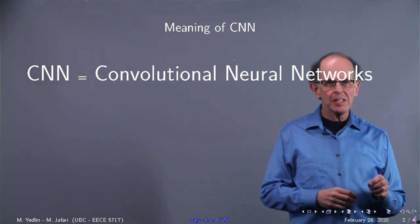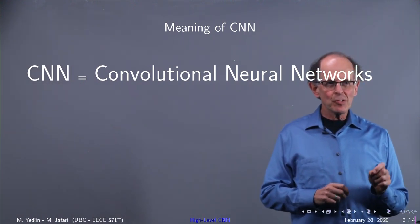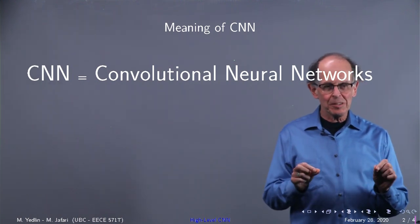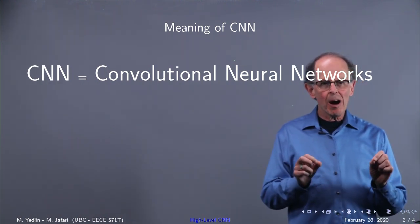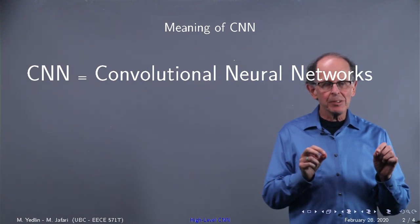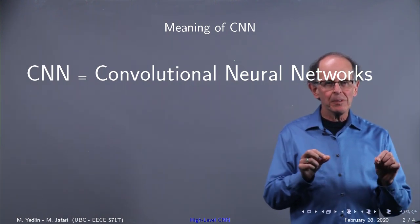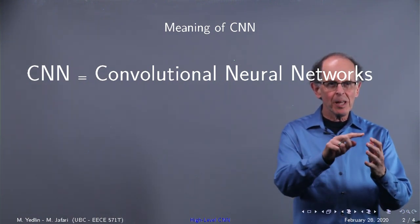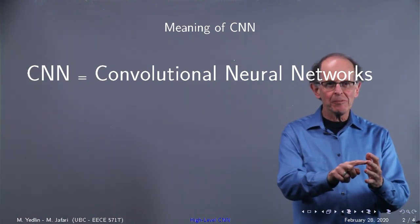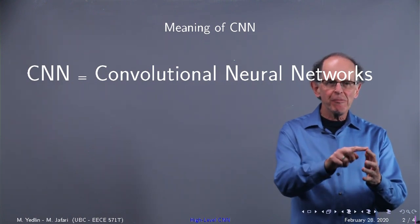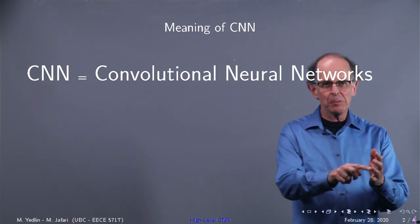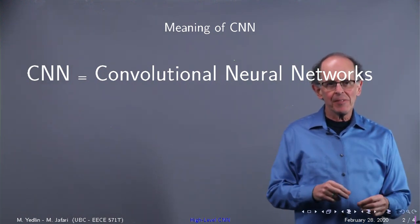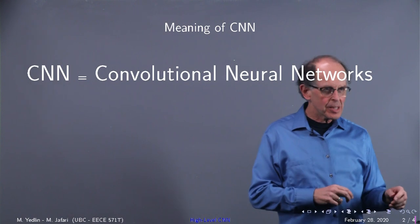I have to say something about the title. Notice it's 'convolutional,' meaning it's an adjective. The actual operation is convolutional-like, but the operation is correlation. It's the shift-multiply-add portion of convolution, which is flip-shift-multiply-add. So if we cut out the flip, we've got correlation, and that's what we use in CNN.